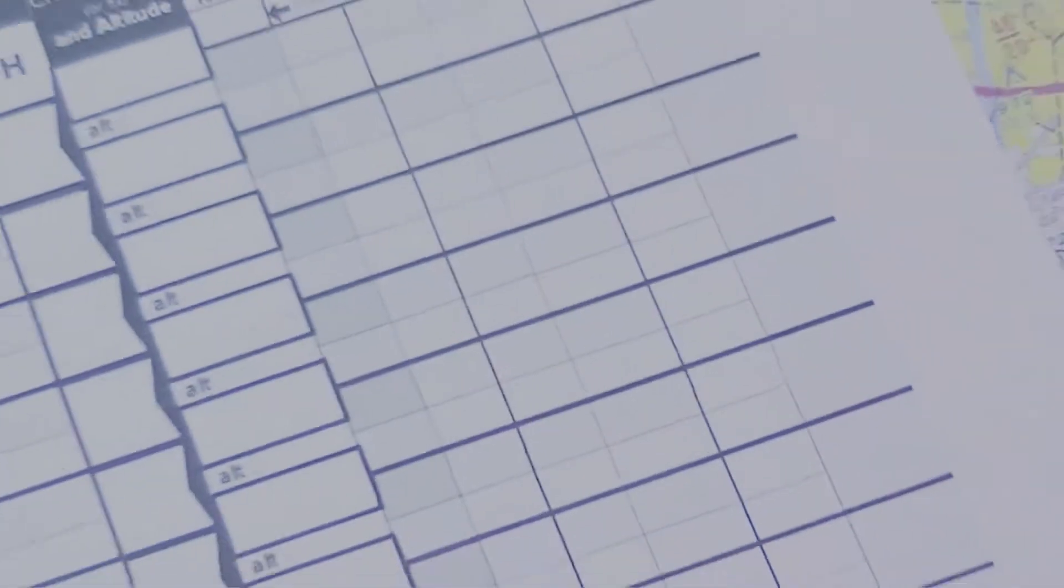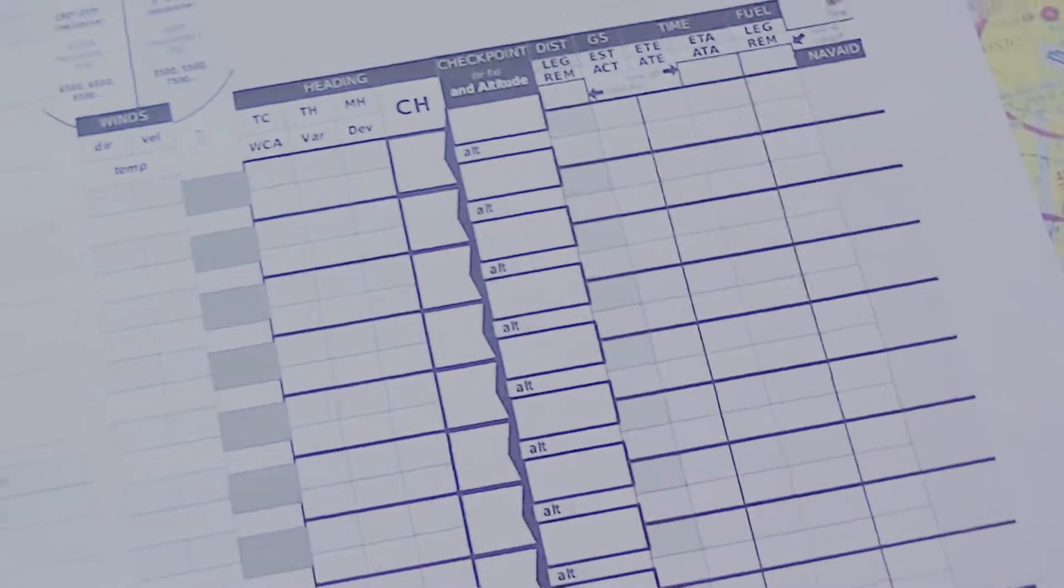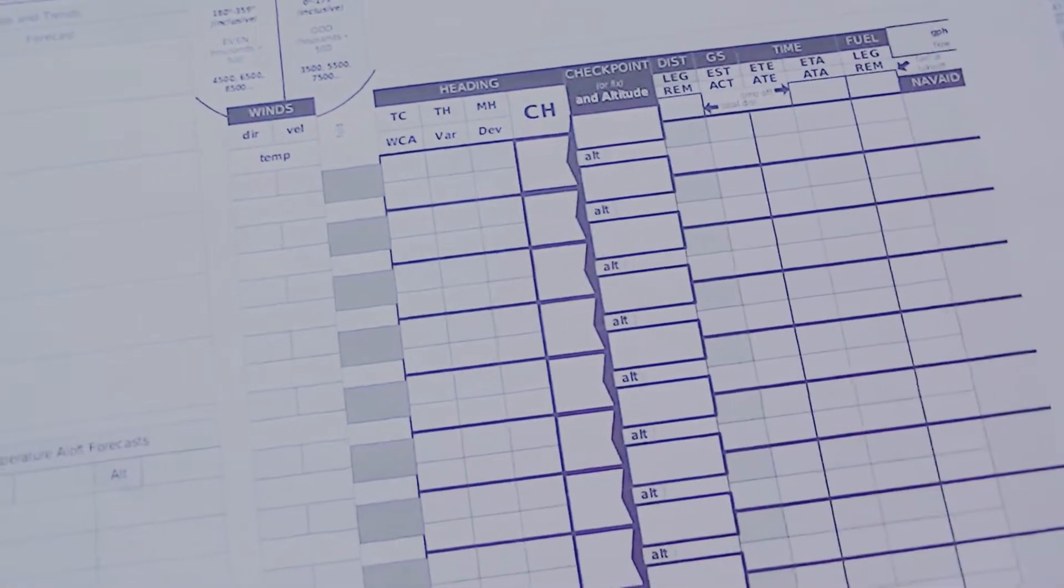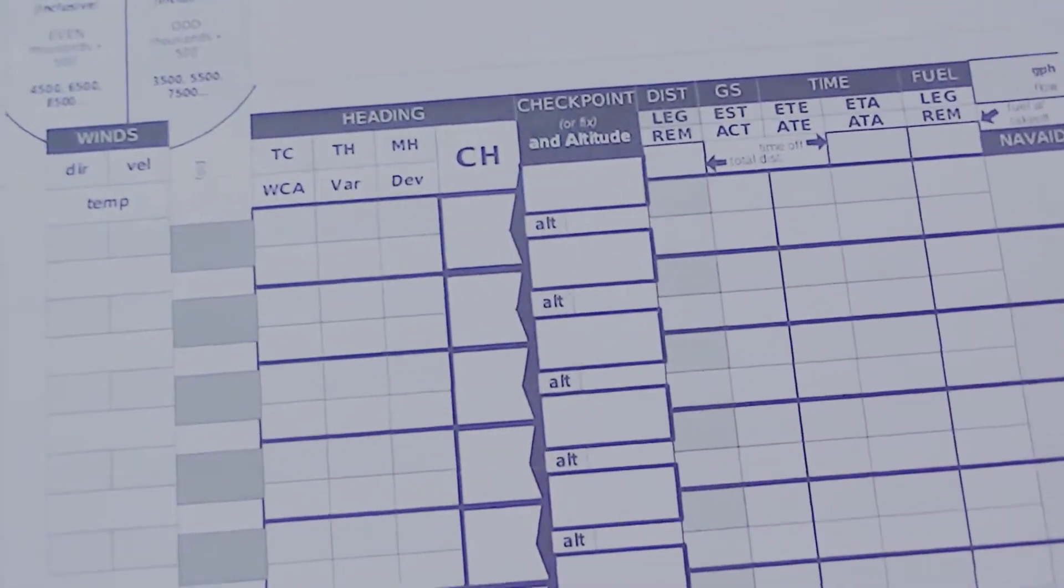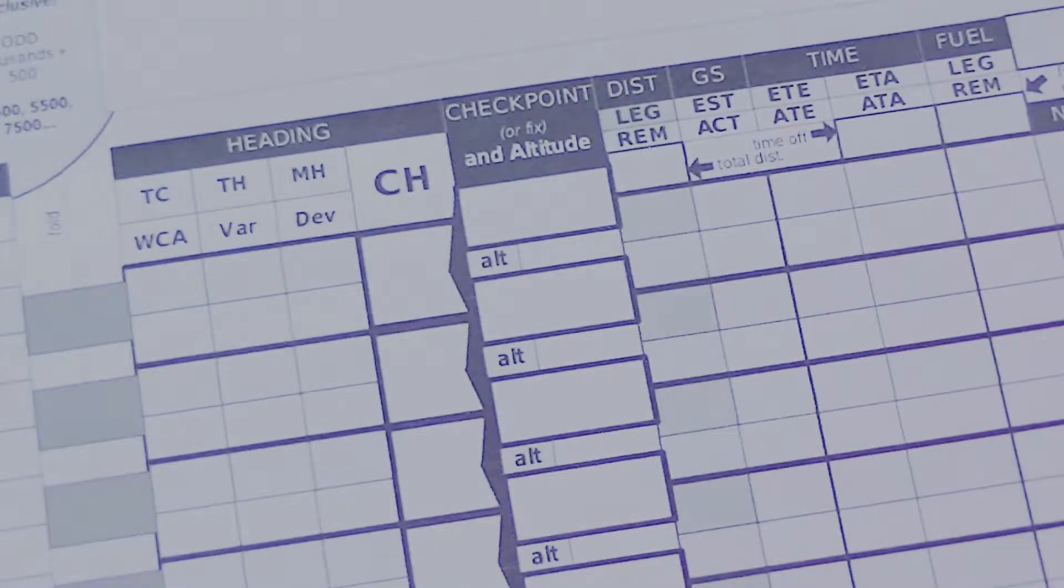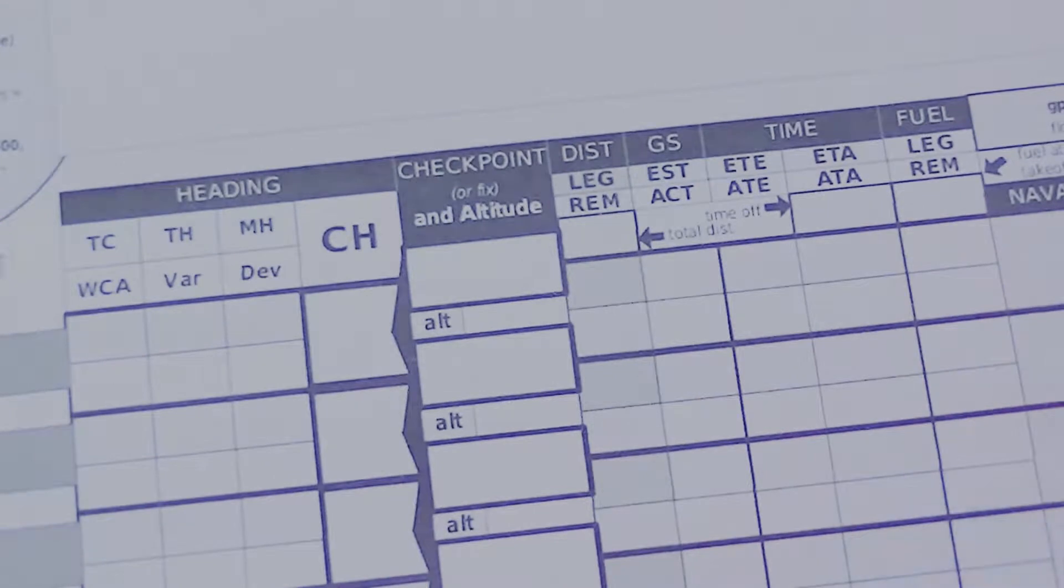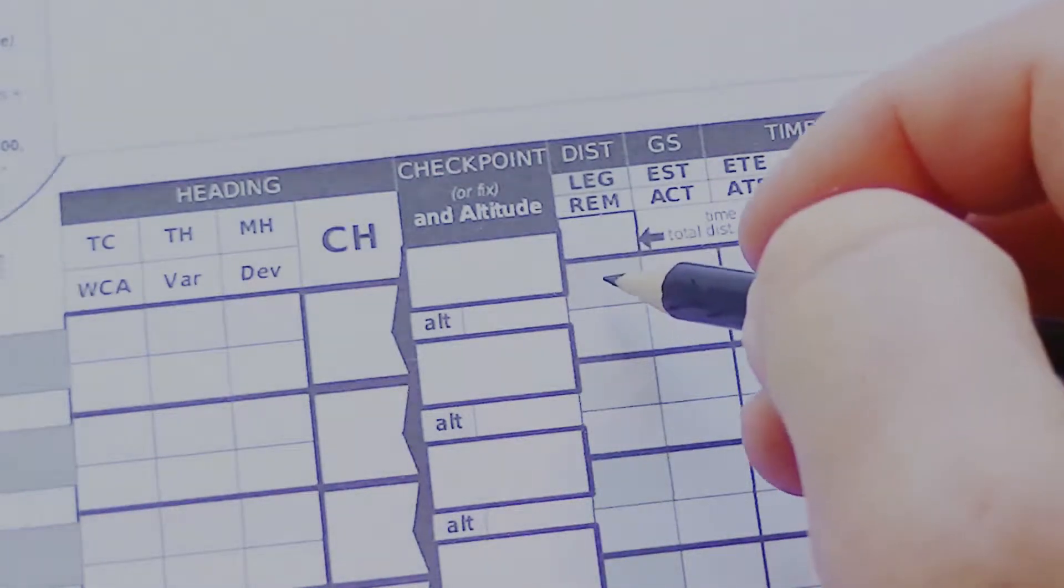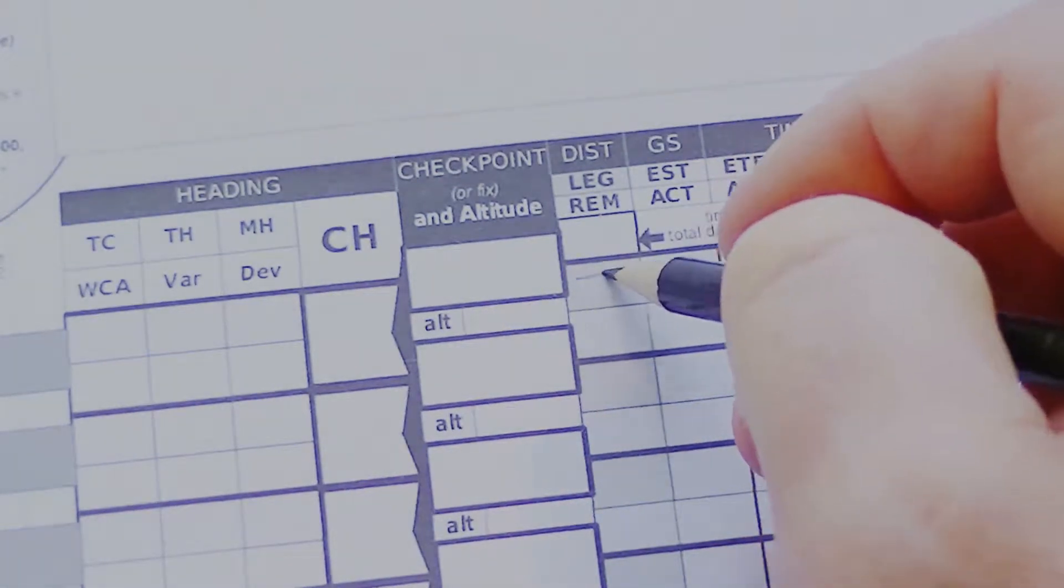So I can take my navigation log. I got this from dauntlesssoft.com. It's a free navigation log if you want to use the same thing. I'll just start plugging some data in here. I know that my distance is 78.